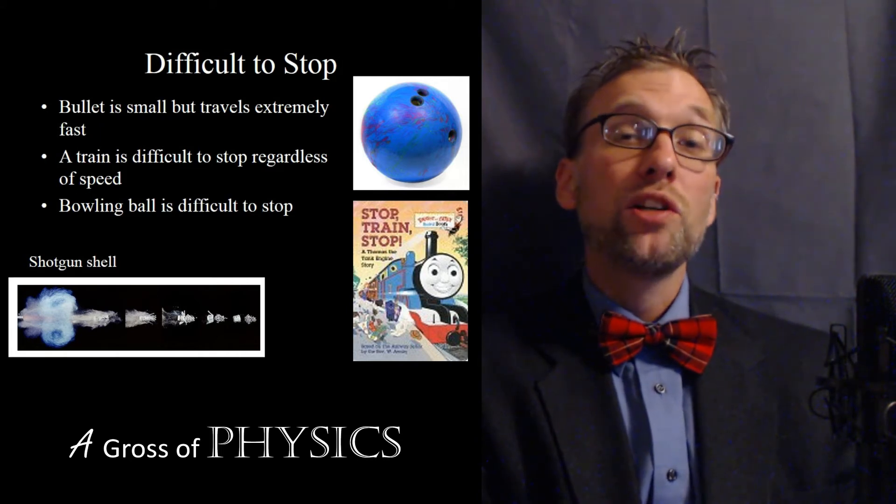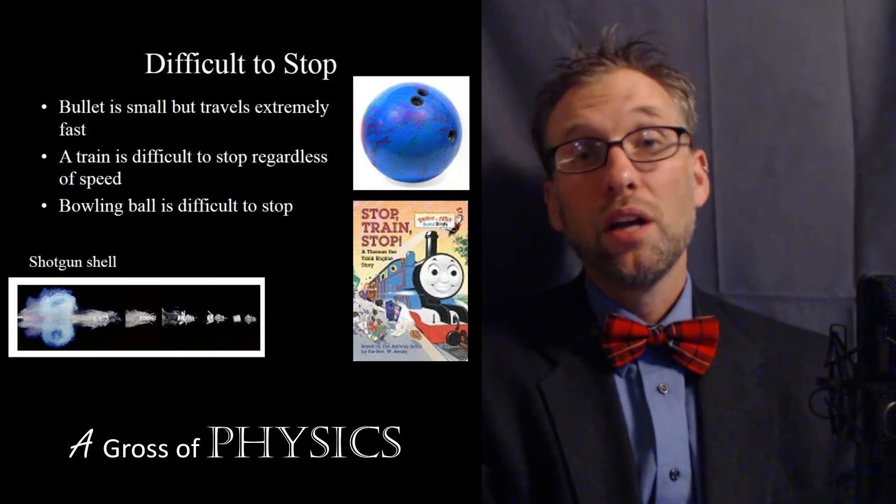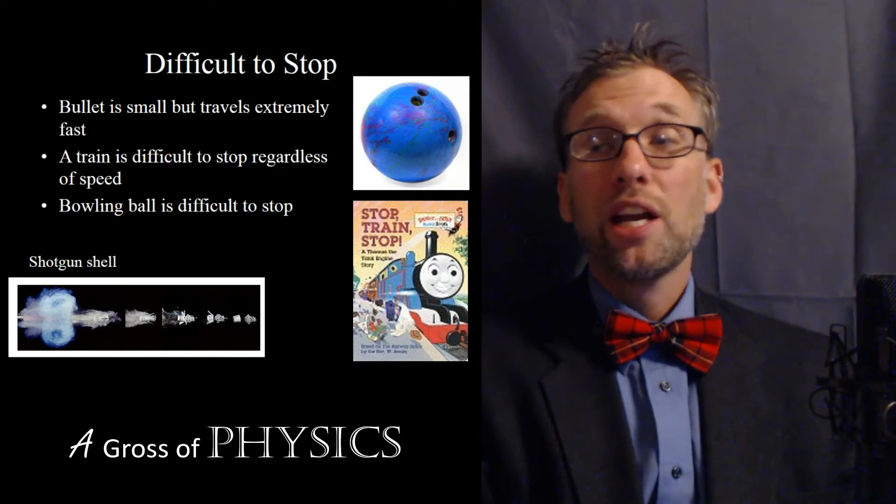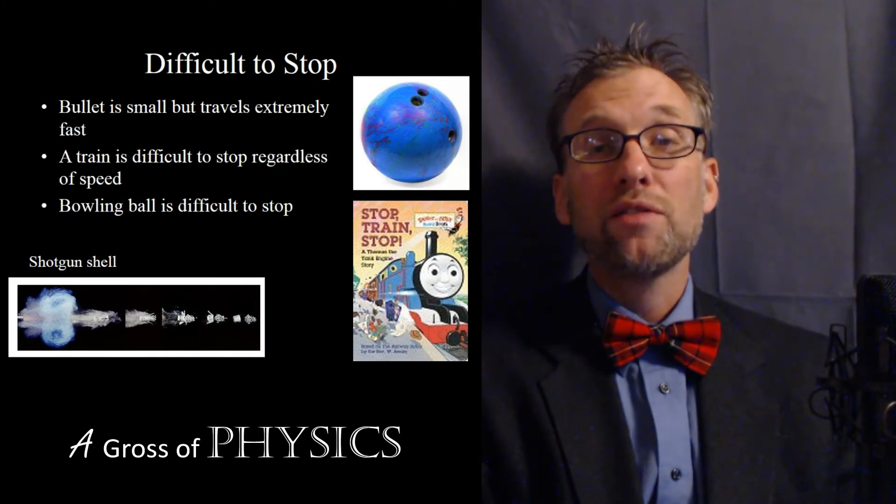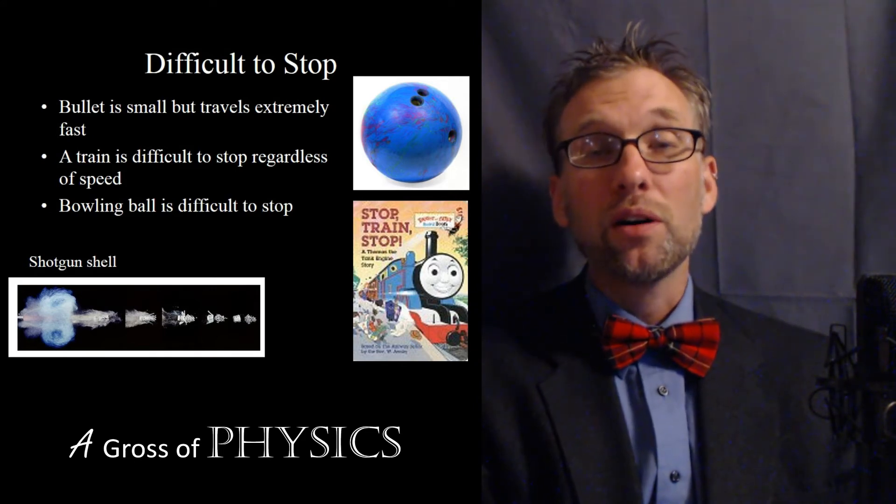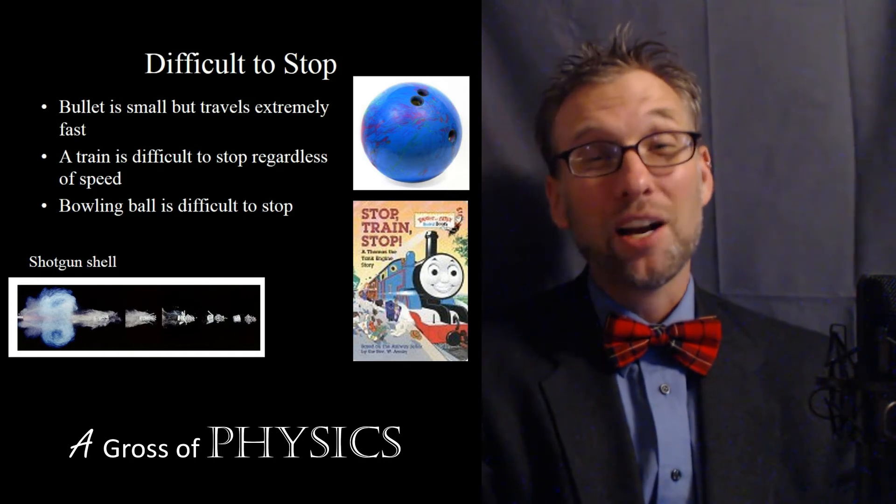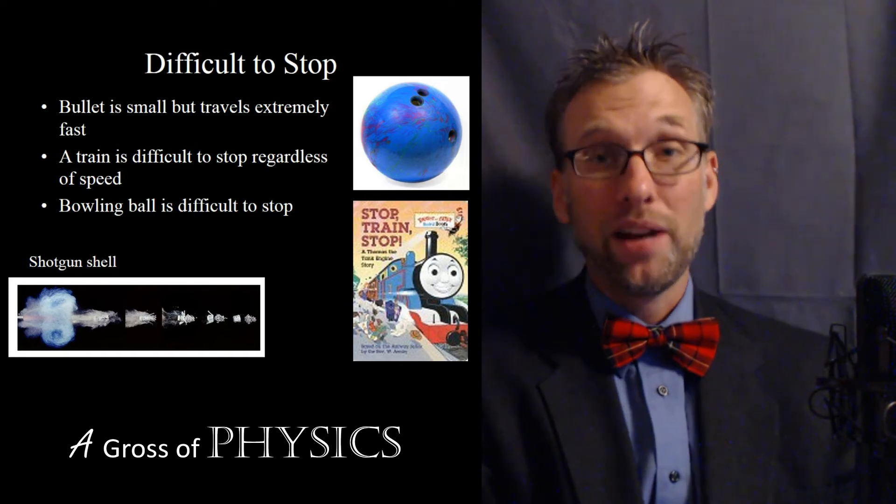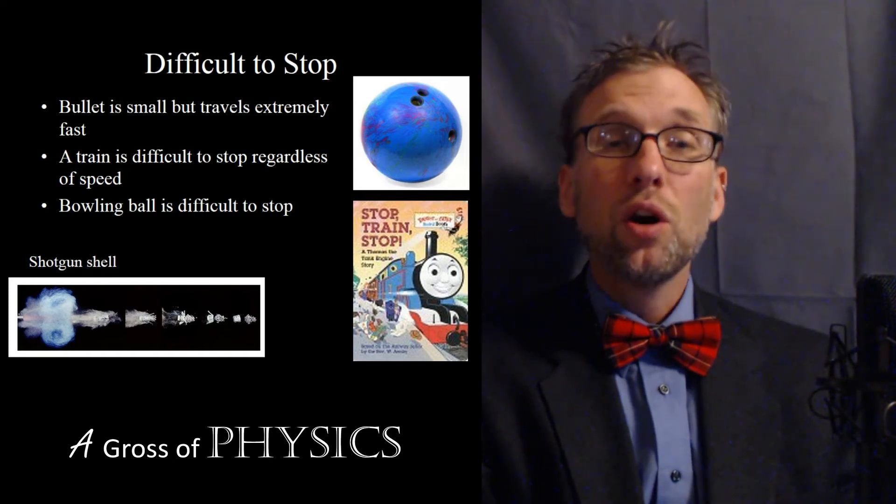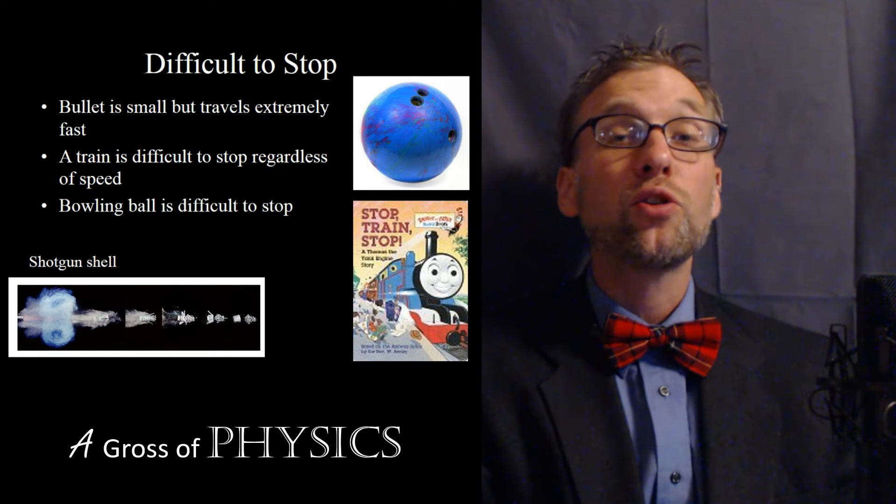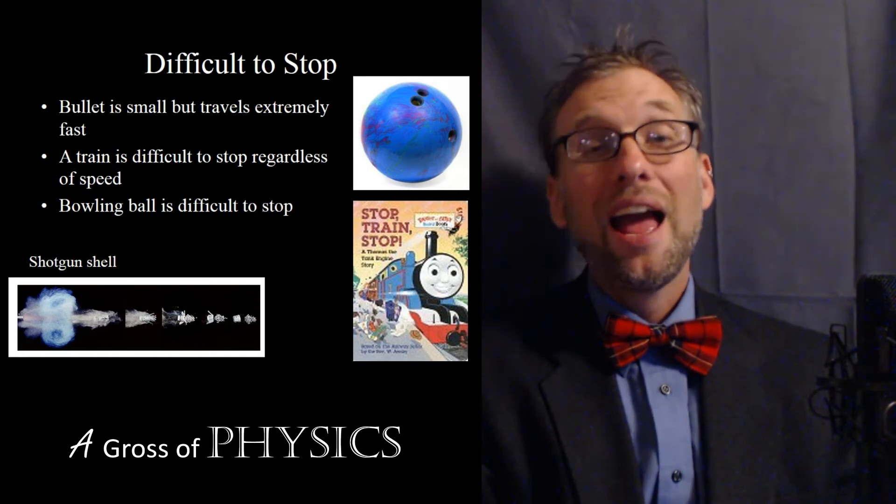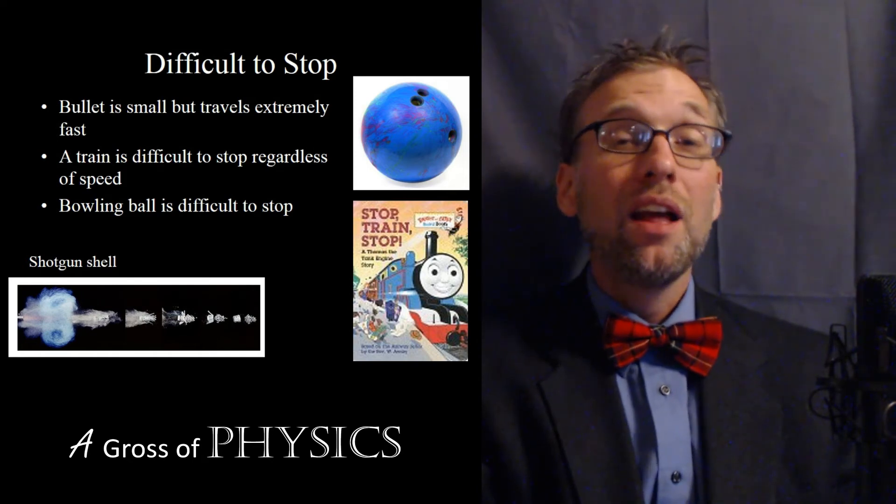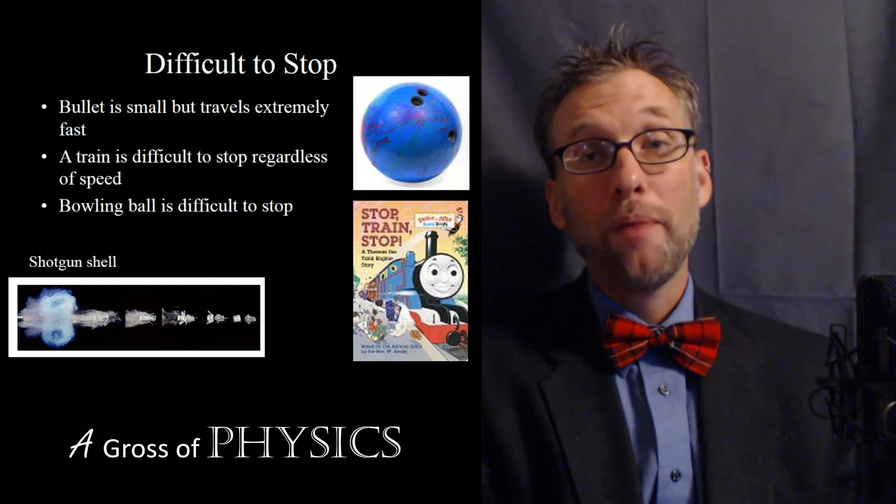On the other hand, we might have a large object in the macroscopic world such as a train. A train can be traveling even at a small rate of speed, five or ten miles per hour, but if you stand in front of it you're not going to be able to stop it. In fact, if there was a car in the tracks that would have difficulty stopping it. So the fact that the train, although traveling at a small speed, has a high mass, that would cause it to have great momentum.